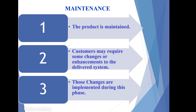The last phase is maintenance. The product is maintained after delivering it to the customer. Customers may require some changes or enhancements to the delivered system. After delivering the software, if the customer needs changes or enhancements, those changes are implemented during this maintenance phase. We must implement everything the customer needs during maintenance.